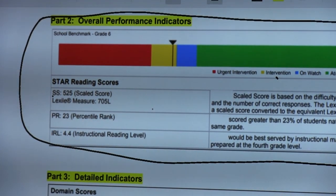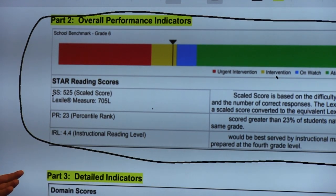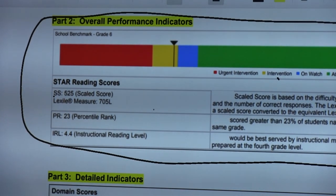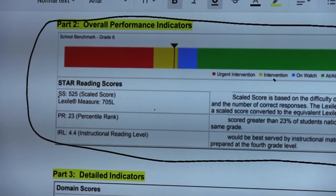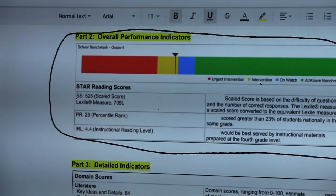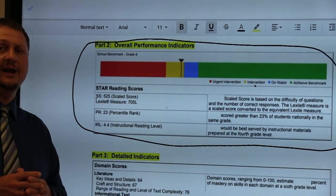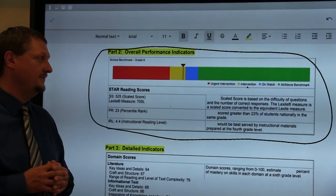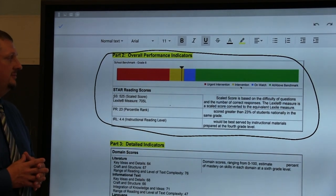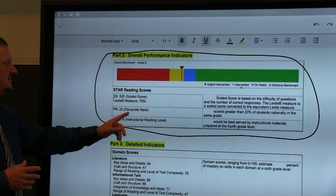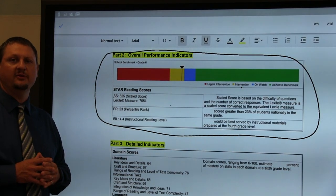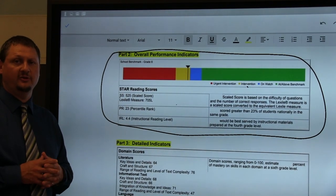As teachers we would look at this report and we would identify specific materials that this student could use that is at their grade level but also with the understanding that students are still responsible for mastery level of their actual grade level that they are assigned. As a parent I would look at this report and I would help my student use this Lexile range to select the appropriate books for them to read for AR points or if it's just for enjoyment.